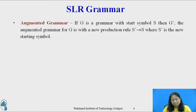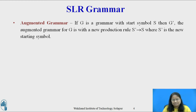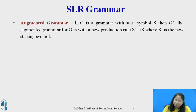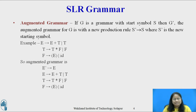Augmented Grammar. If G is a grammar with start symbol S, then G', the augmented grammar for G, is formed with a new production rule S' derives S, where S' is a new start symbol. The purpose of this new production is to indicate to the parser that it should stop parsing when it is about to reduce S' derives S. The example grammar and its augmented grammar, with the added production E' derives E, are given on the slide.